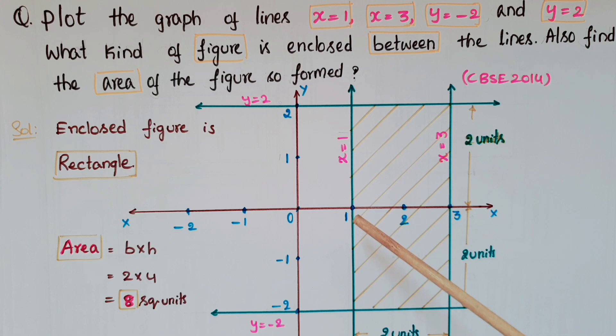y=-2 is parallel to the x-axis and below the x-axis at a distance of 2 units. This is y=-2. And y=2 is above the x-axis and parallel to the x-axis at a distance of 2 units. So this is the y=2 line.